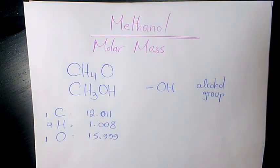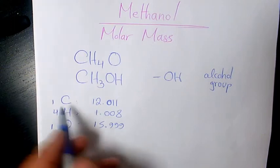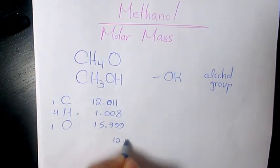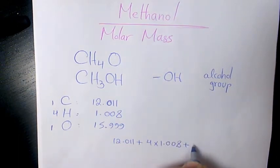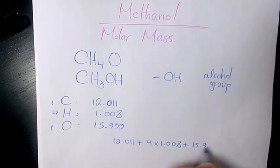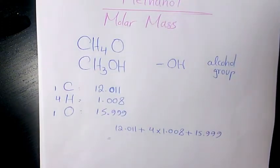Now we can find the total. It's going to be 12.011 plus four times 1.008 plus one times 15.999. That's 12.011 plus 4 times 1.008 plus 15.999, which makes 32.042.